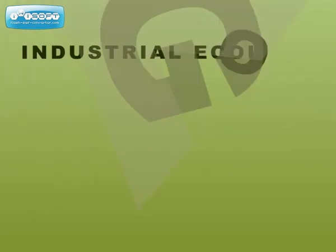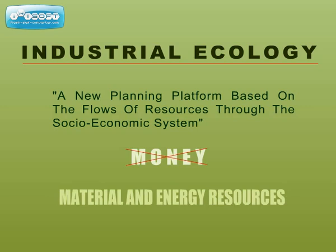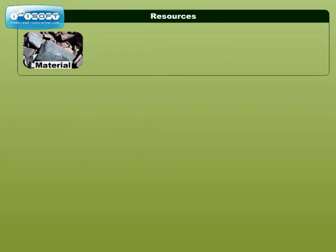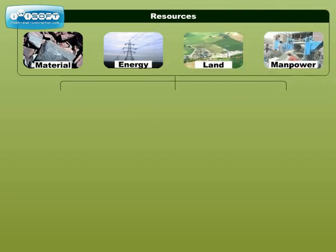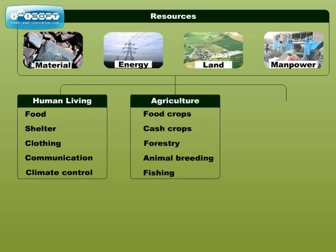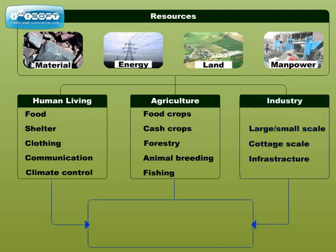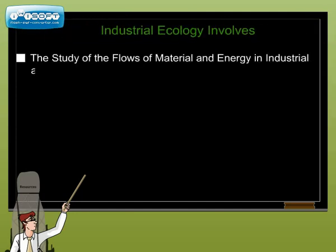Industrial ecology is a new planning platform that is based on the flows of resources. It is the study of flows of material and energy through socioeconomic systems with a view to optimizing their use. This is in sharp contrast to conventional monetary economics, which involves the study of the flow of money through socioeconomic systems. This approach is built on the idea that industrial activity should not be considered in isolation from the wider world, but should be viewed as industrial ecosystems functioning within the natural ecological system or the biosphere. In other words, industrial ecology is the study of flows of material and energy in industrial and consumer activities.